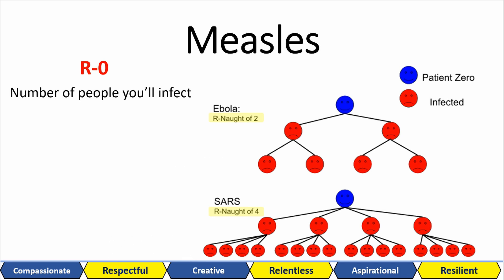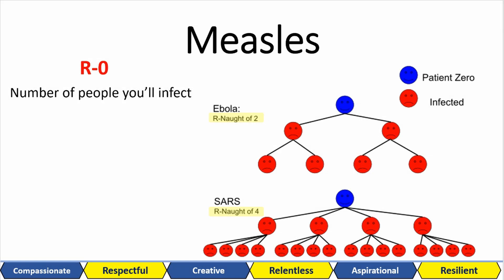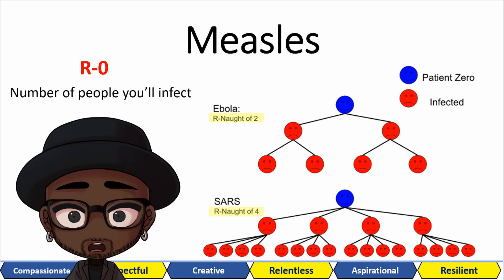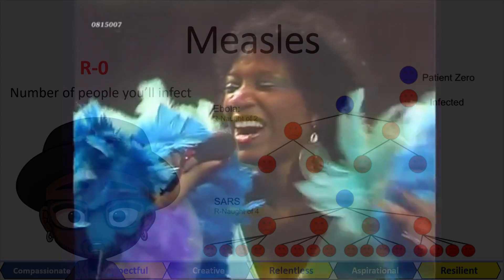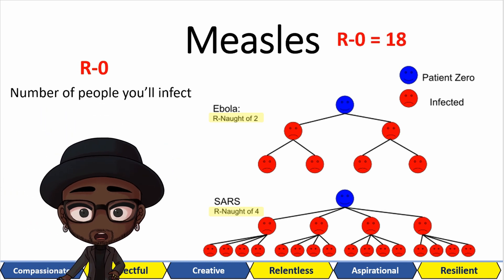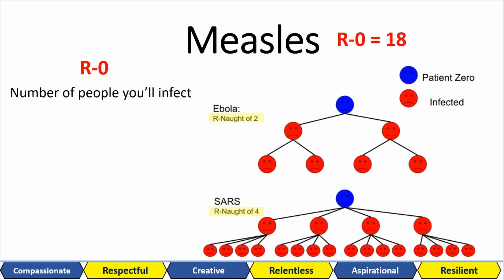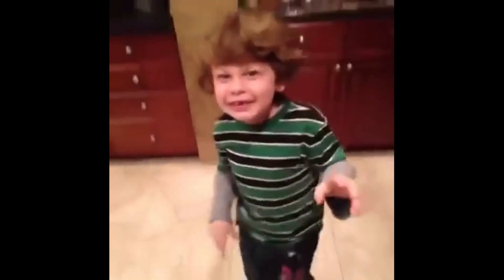Have a guess at measles. Just guess the number for the R0. Did you say 5, 7, 10? The R0 is 18. That means in just the second cycle of measles from one infected person, you have 324 people infected. Jesus Christ. It spreads through the air from coughs and sneezes — air droplets, like we saw in the last lesson.